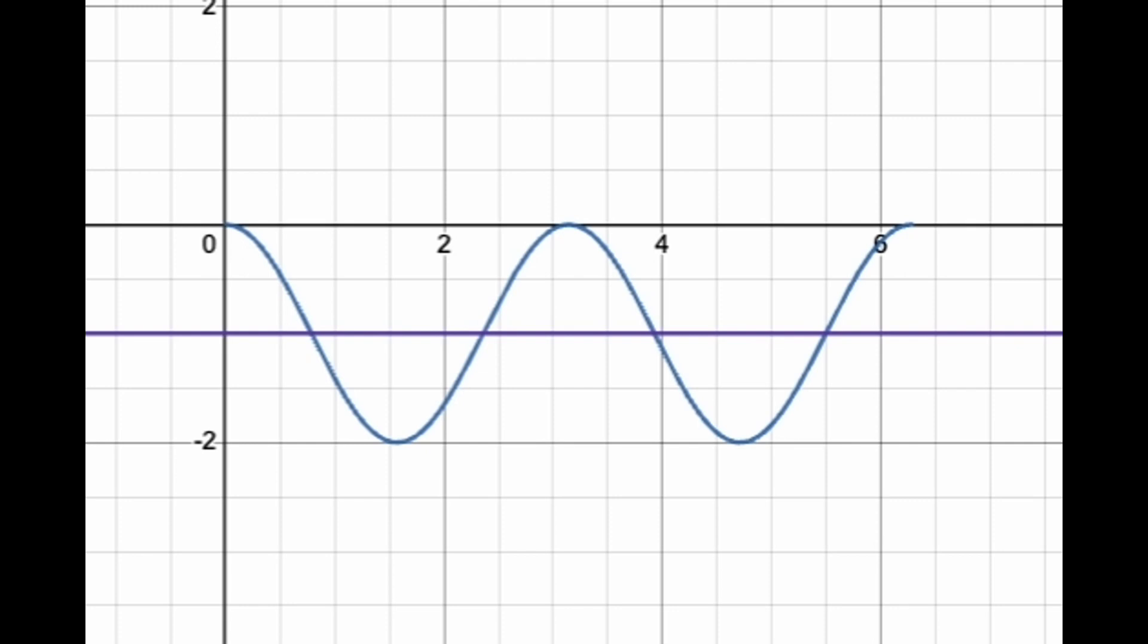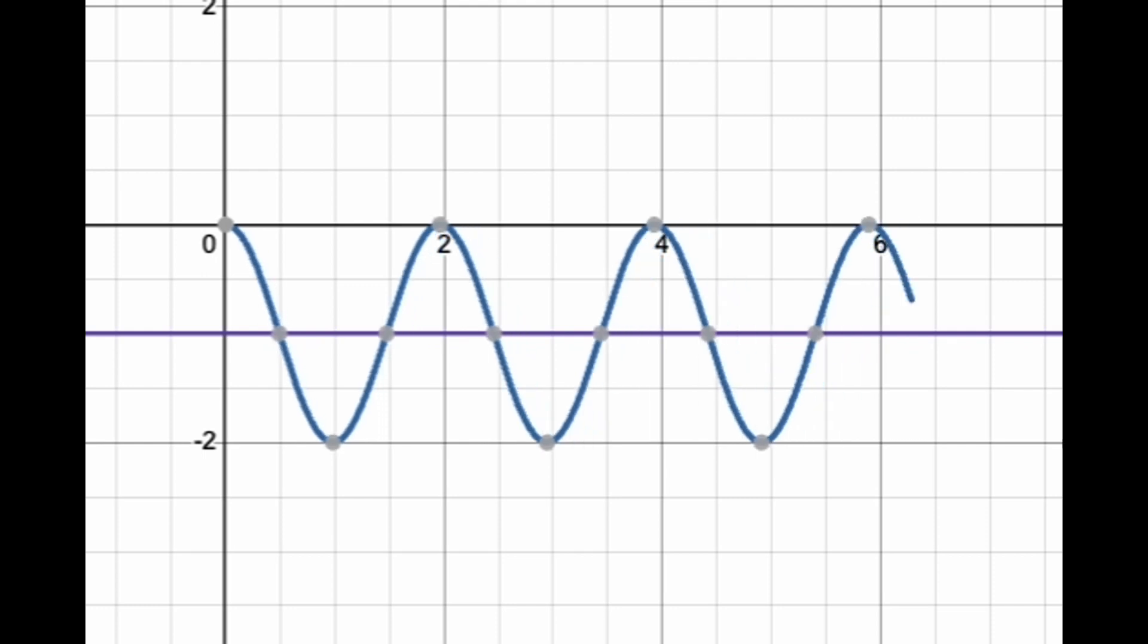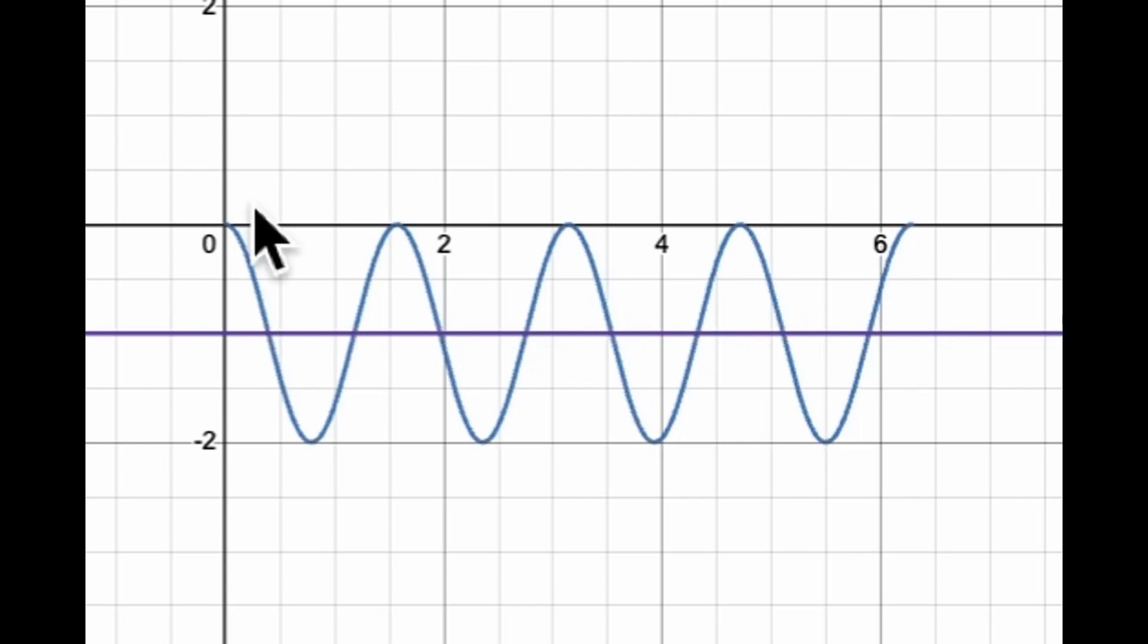You have two full circles from 0 to 2π. This point becomes π now, and that becomes 2π. So if ω equals to 3, you have 3. Or ω equals to 4, and you're going to have 4 full circles here.